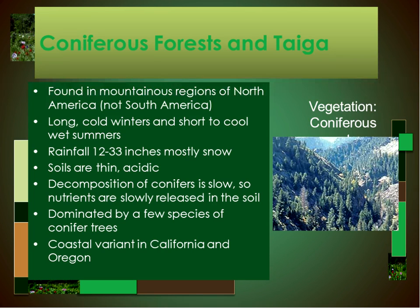Looking at the coniferous forests and taiga as a group: these types of areas are found in mountainous regions of North America and the upper latitudes. The winters are long, cold, and short growing seasons go from warm to cool, wet summers. Rainfall is 12 to 33 inches, and some of that precipitation falls as snow. Soils tend to be thin and acidic because the decomposition of conifers is very slow, so nutrients are very slowly released into the soil. Most forests are dominated by a few conifer trees.